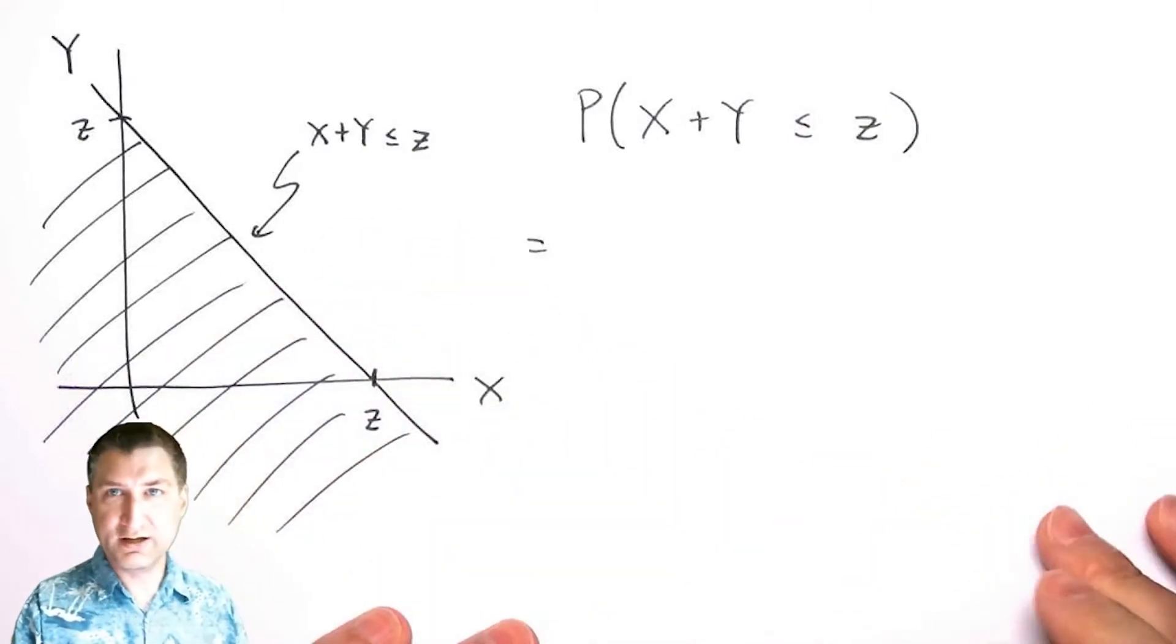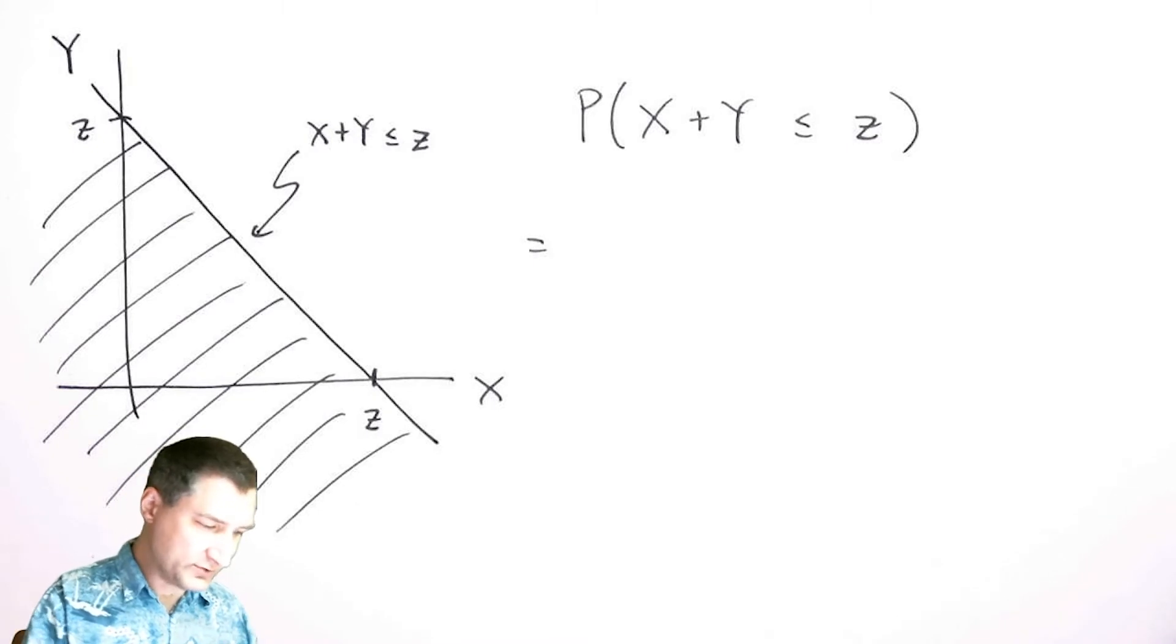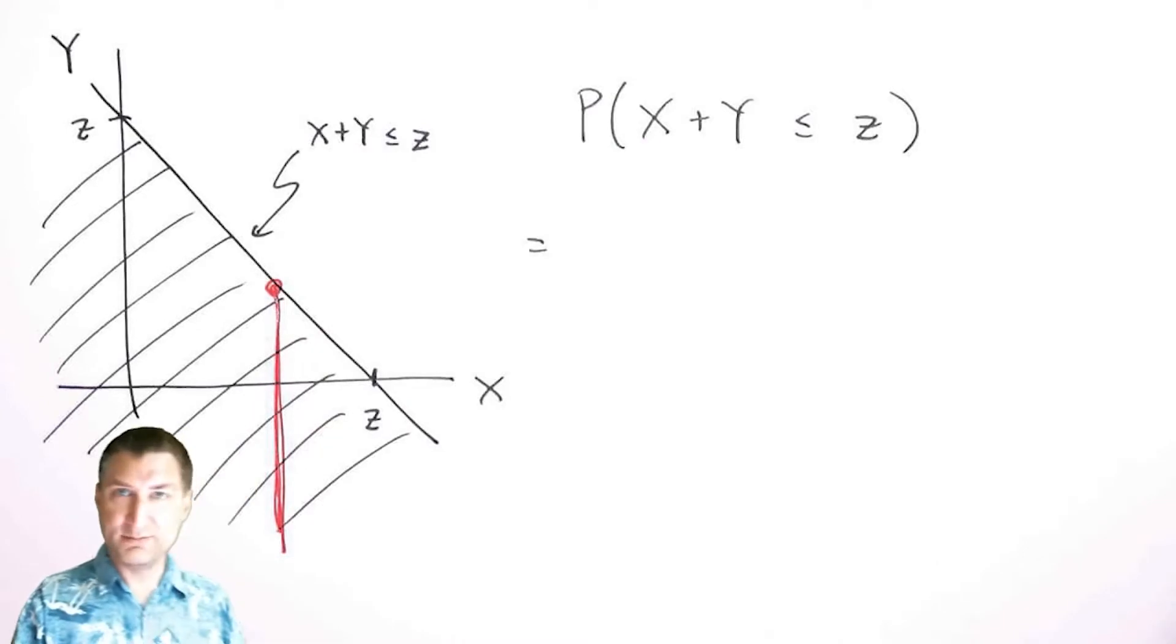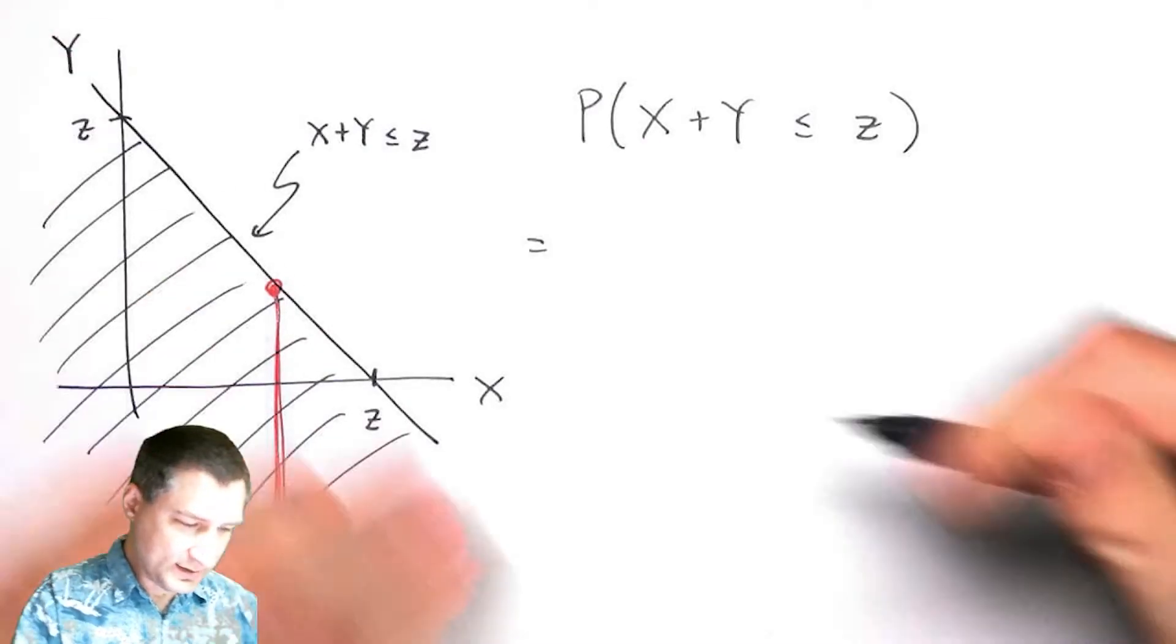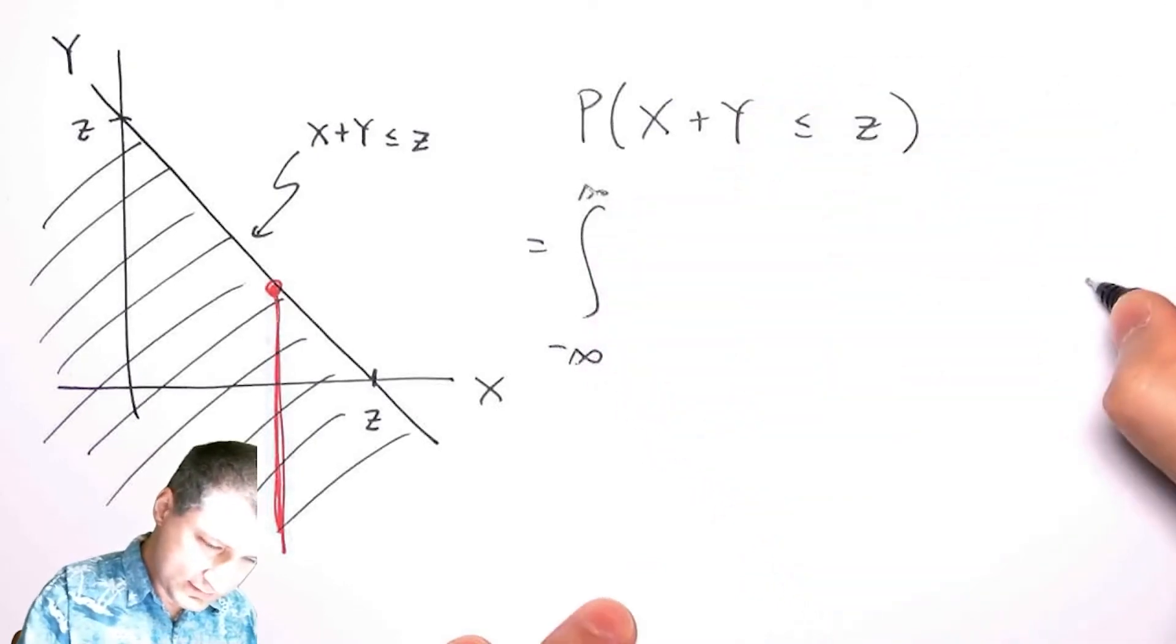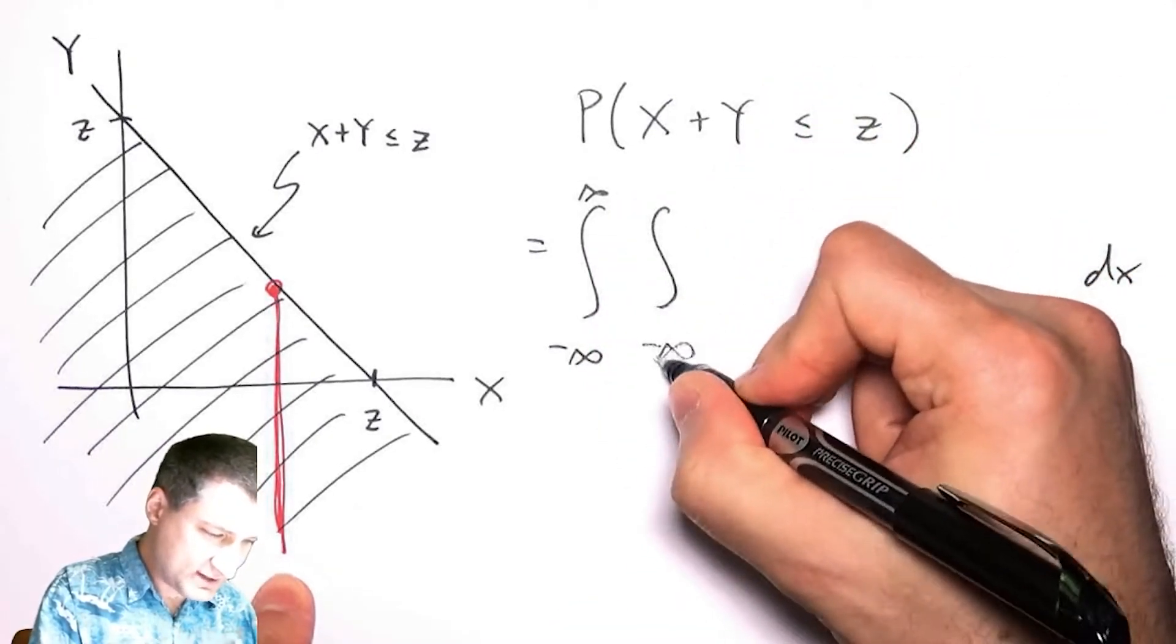Over the shaded region of the joint PDF. Let's think about the best way to do this. What I'm going to do is integrate down the columns of this, so X ranges from minus infinity to infinity.